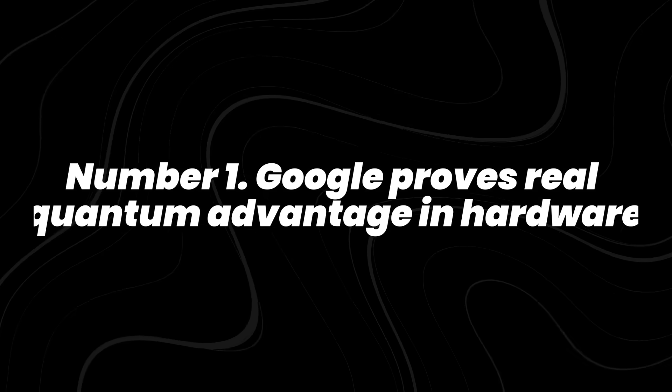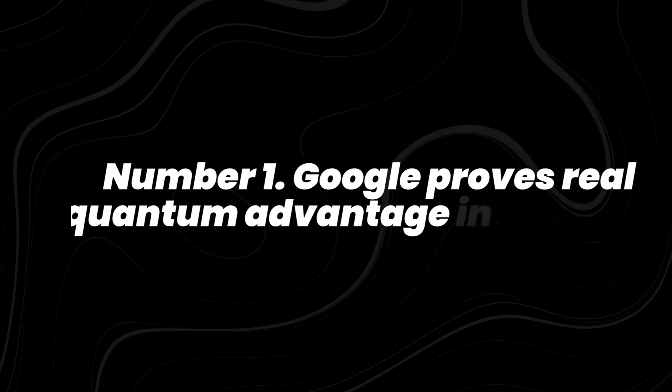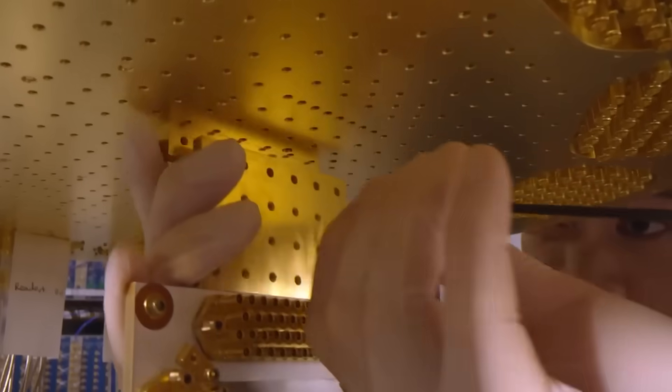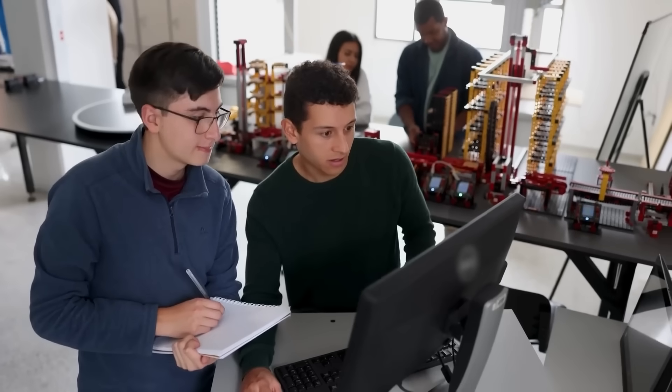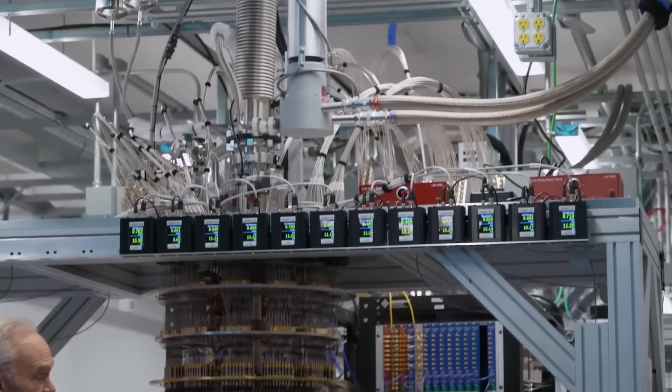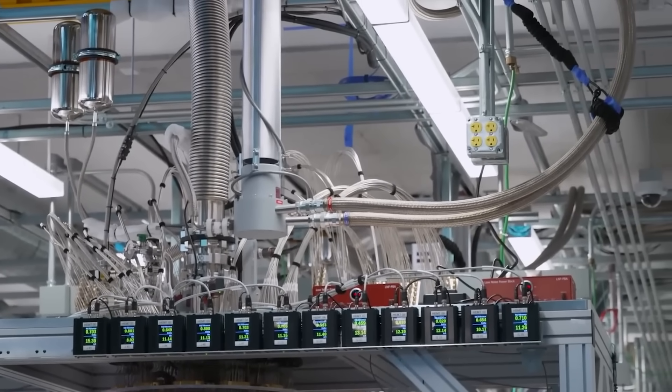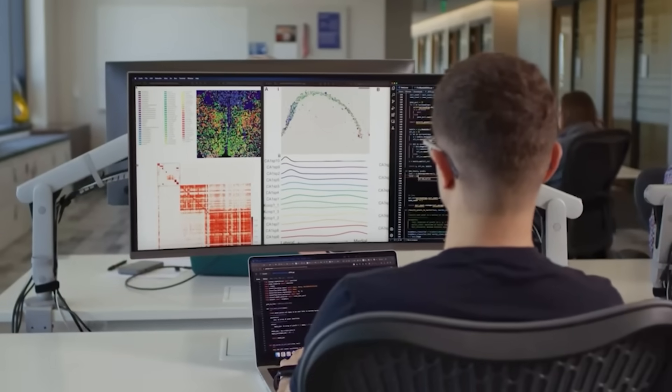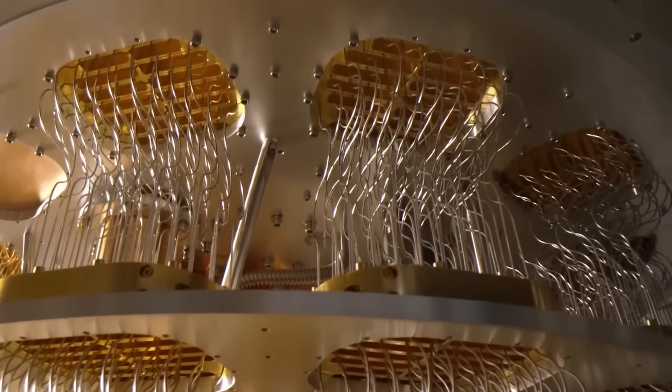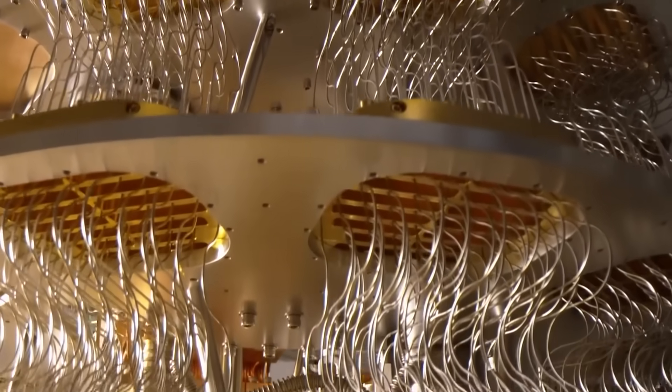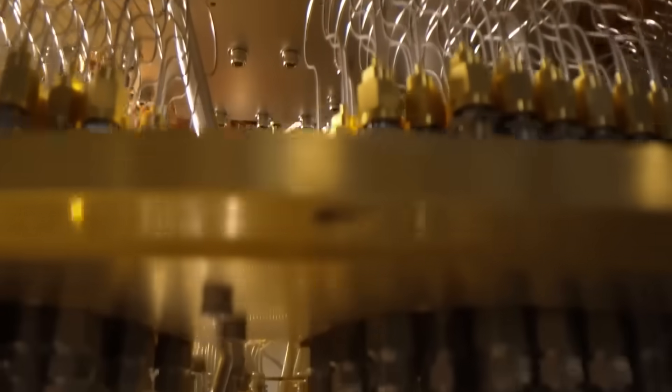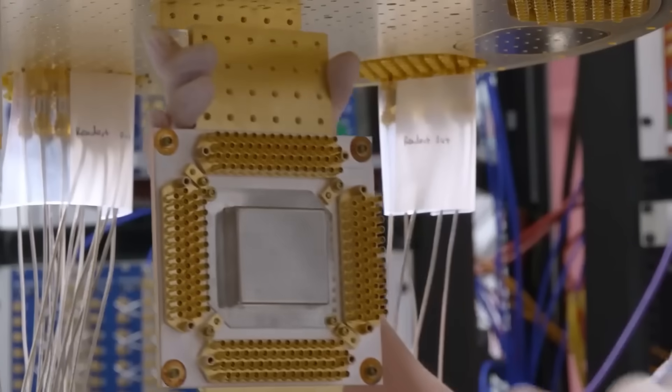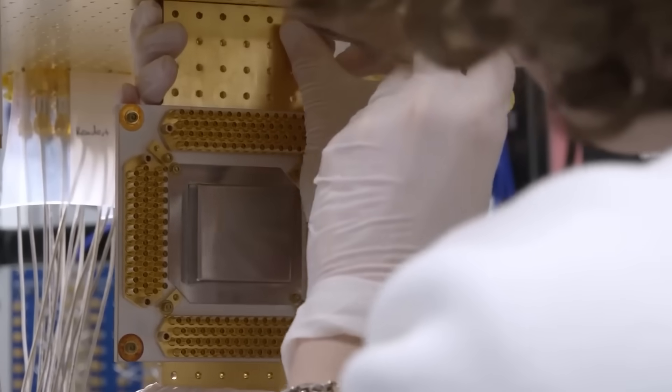Number 1. Google proves real quantum advantage in hardware. For years, quantum advantage was a theoretical goal. Companies published papers claiming breakthroughs, but the real question was whether a quantum computer could solve a practical problem faster than the best classical supercomputers on Earth. In 2025, Google demonstrated that using an algorithm called Quantum Echoes, running on the Willow processor. The hardware solved a physics-grade problem more than 13,000 times faster than classical simulations.